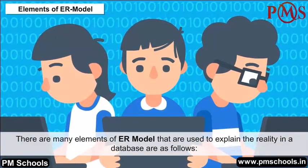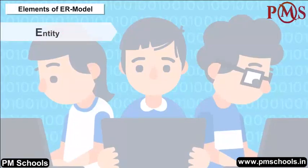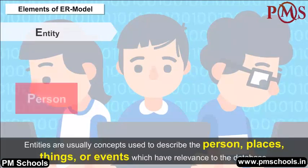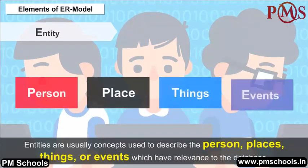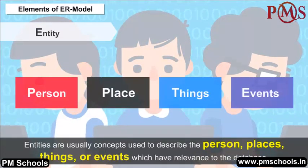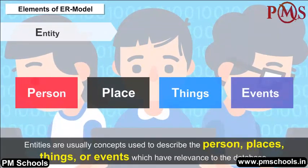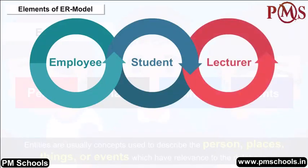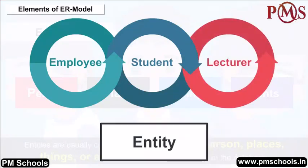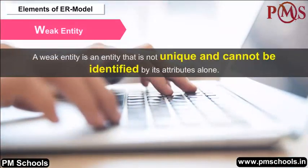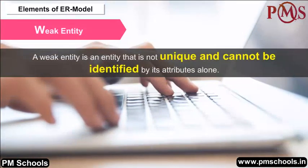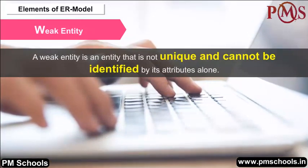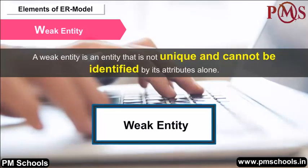Elements of ER Model — Entity: Entities are usually concepts used to describe persons, places, things, or events that have relevance to the database. Some examples are employee, student, and lecturer. An entity is represented as a rectangular box. Weak Entity: A weak entity is an entity that is not unique and cannot be identified by its attributes alone. It is represented with a double-lined rectangular box.